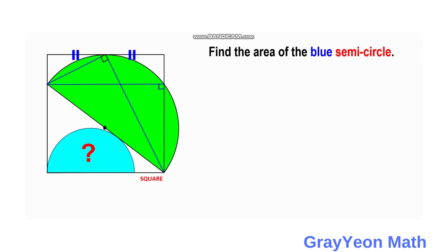We label this as A. Next, we focus on the bigger triangle. Since this side is divided by two — the upper side — this distance is actually half of the side. So if this is half and this is twice, then this is actually S, and this is S over two. If this is S over two, this should also be S over two.